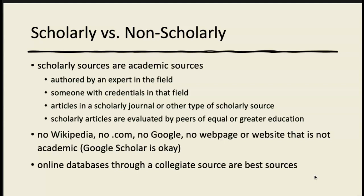A lot of the results in Google Scholar are dissertations — they might be 137 pages, part of someone's big paper they had to write to get their PhD. Some are available for free; some you'd have to pay for. But sometimes through Google Scholar you can find the title of an article that you can then search for in the WCJC online databases and find that same article.